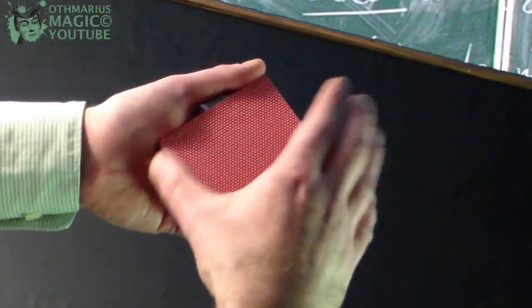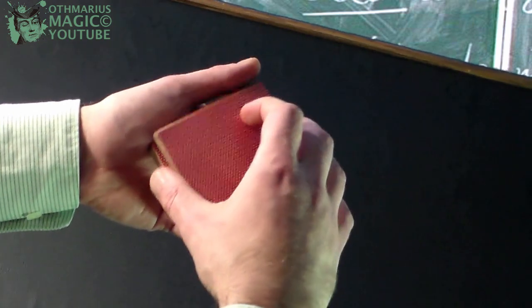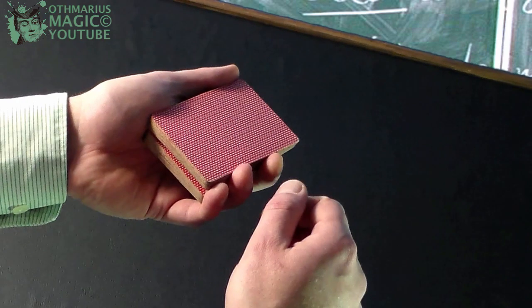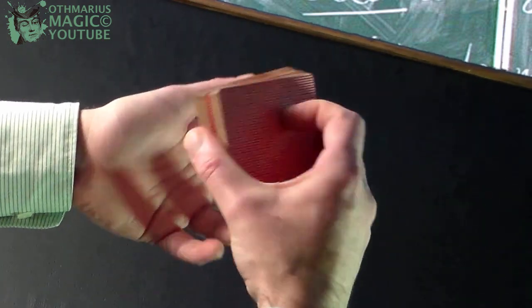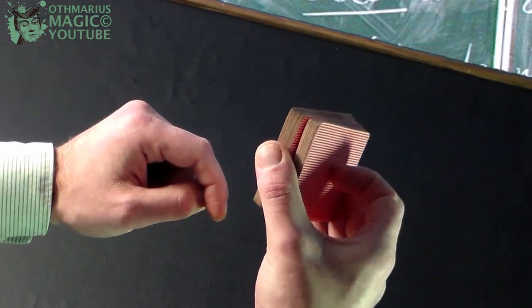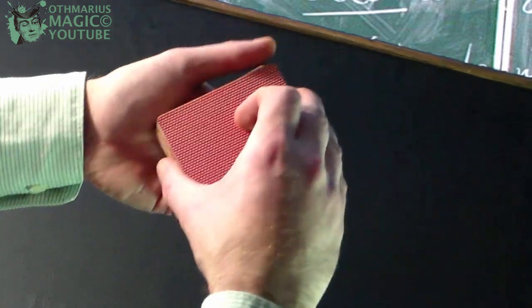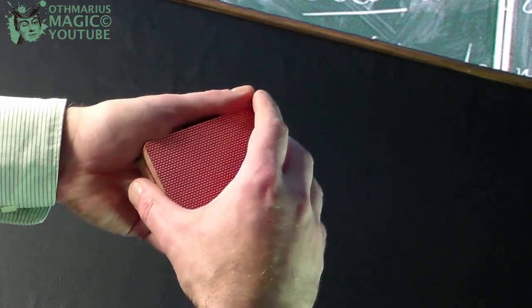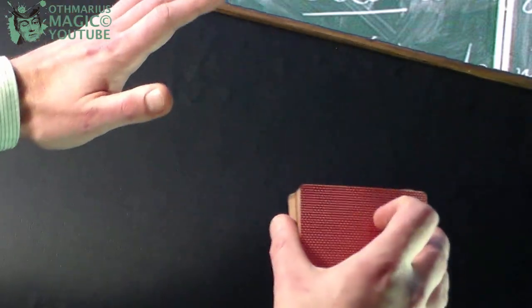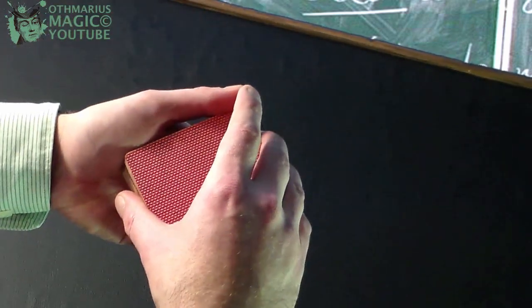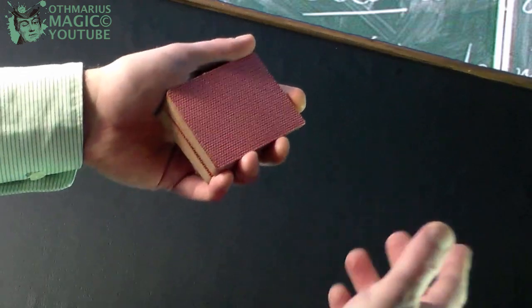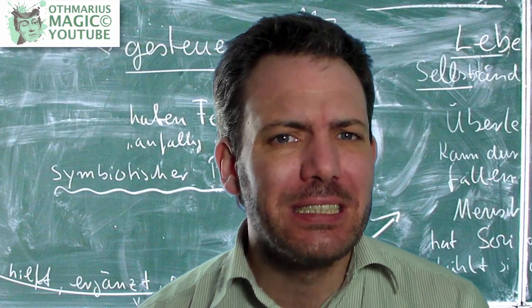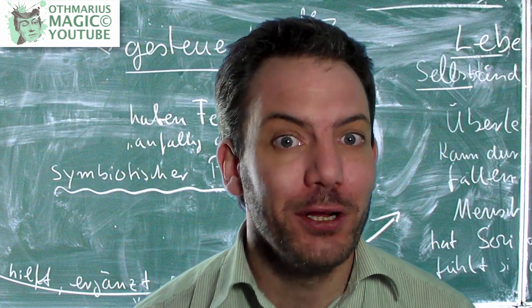As soon as you are comfortable with catching and holding a fair break, practice to transfer the deck from left hand magician's grip to right hand overhand grip while holding the break. This is very important. You have to be able to do this without any effort, being able to focus your attention to everything else in the room while having the deck switching hands completely spontaneously. Mastering this you will make a gigantic step in becoming a real card magician.